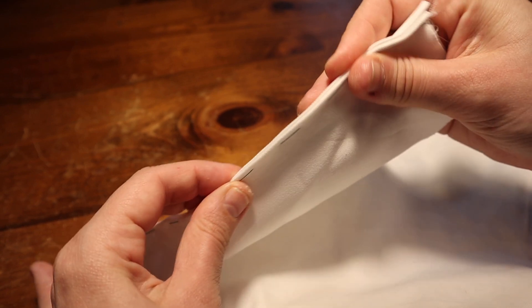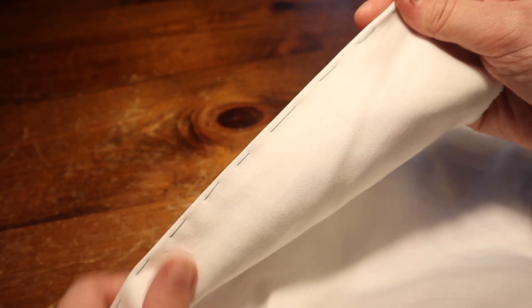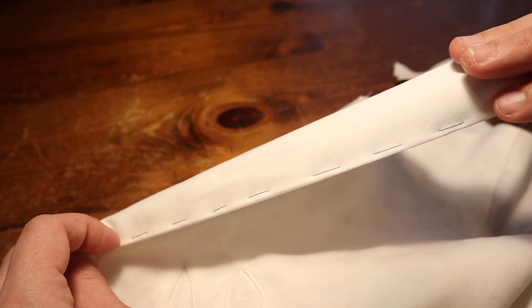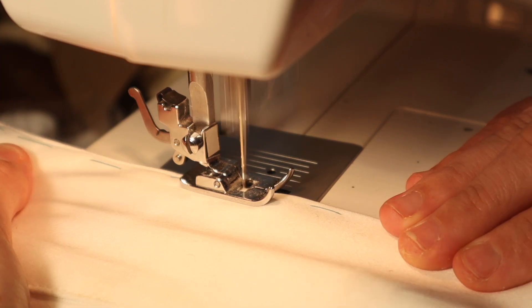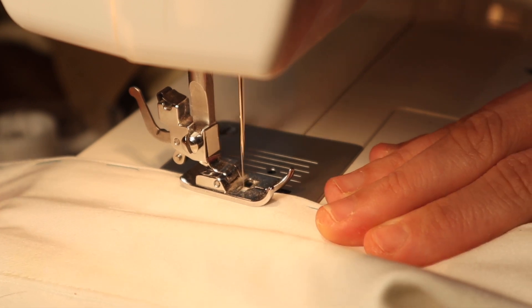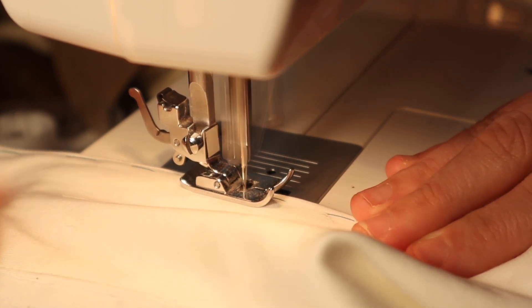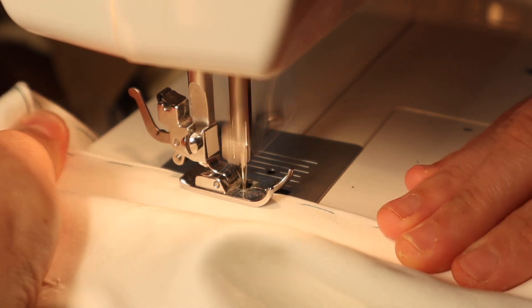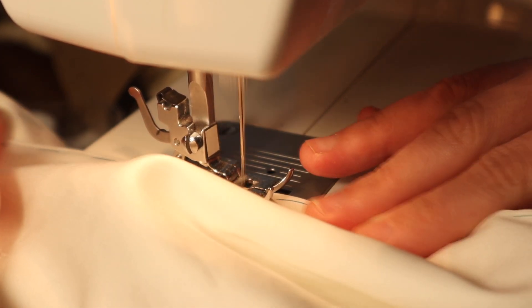Then I fold the seam allowance of the lining to meet the folded seam allowance of the outer layers. I really like to baste these edges together because it makes life so much easier when you go to stitch it. You really don't want those layers moving around on you. This is then stitched as close to the edge as possible. Again, if you're doing this by hand, you can backstitch this. And here's what the finished center back edge looks like.